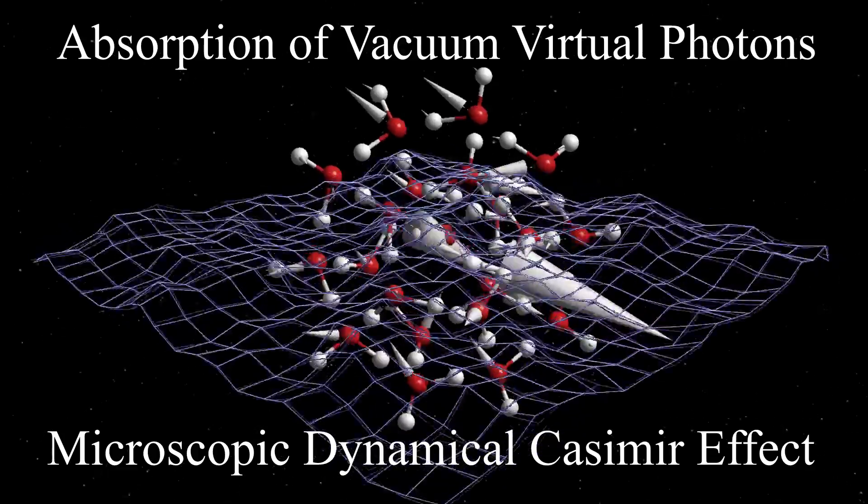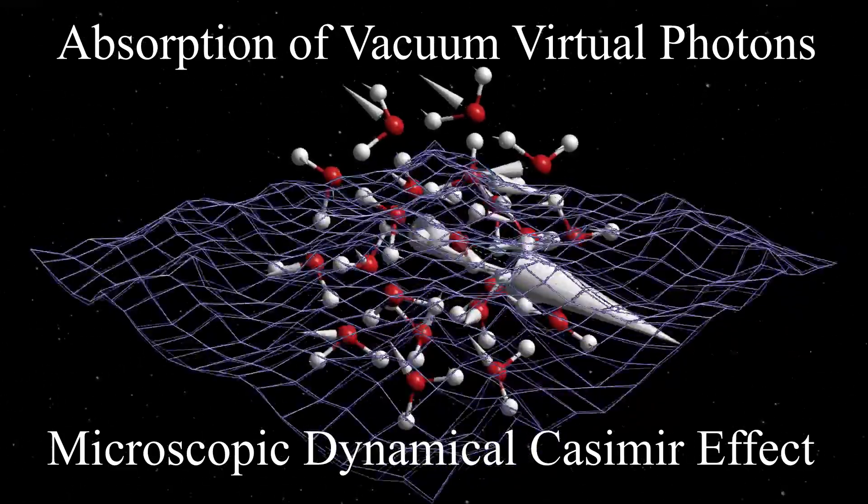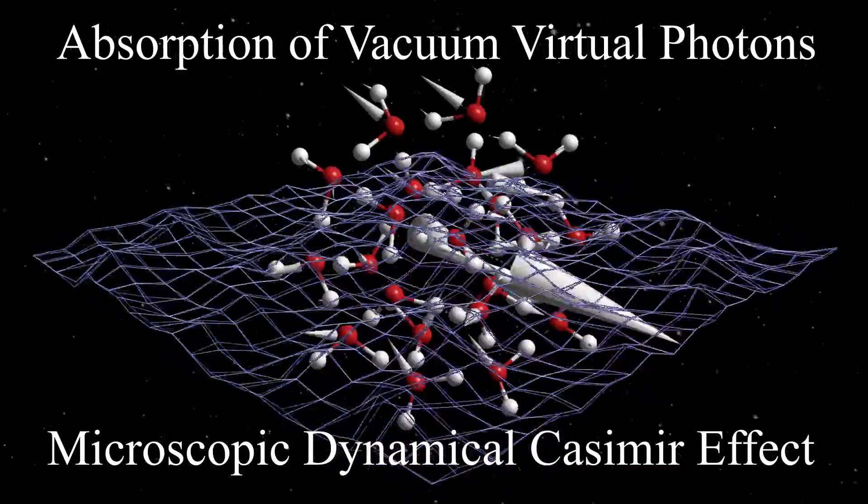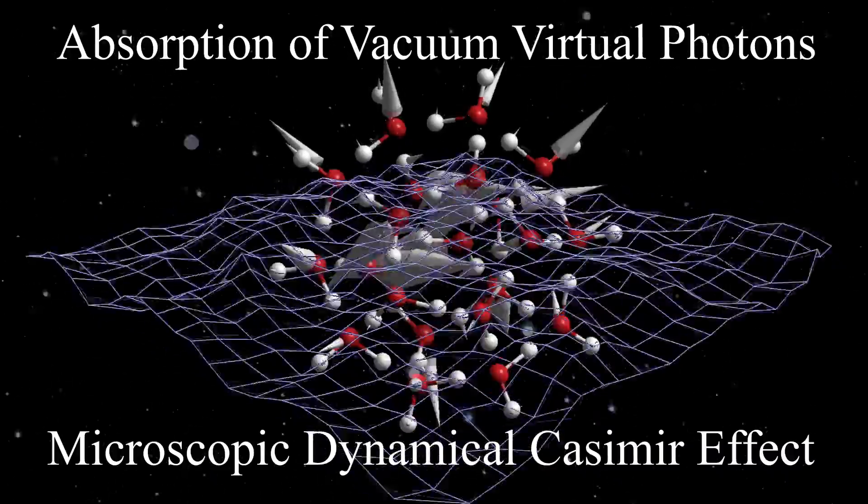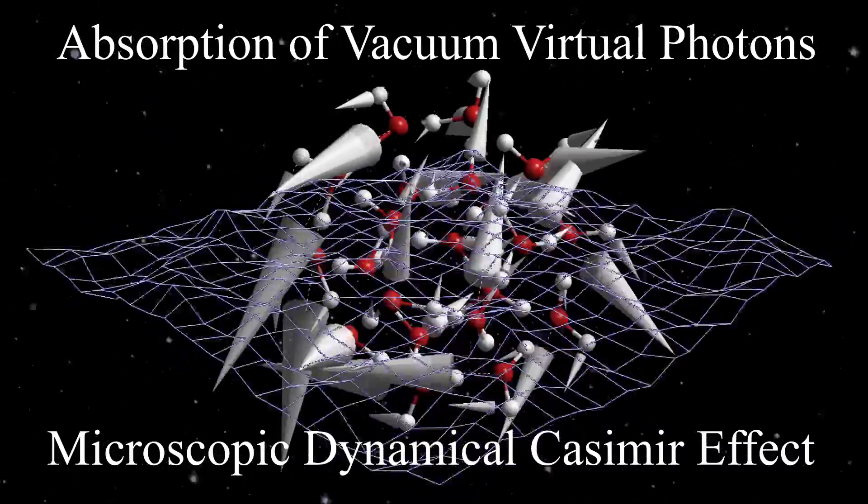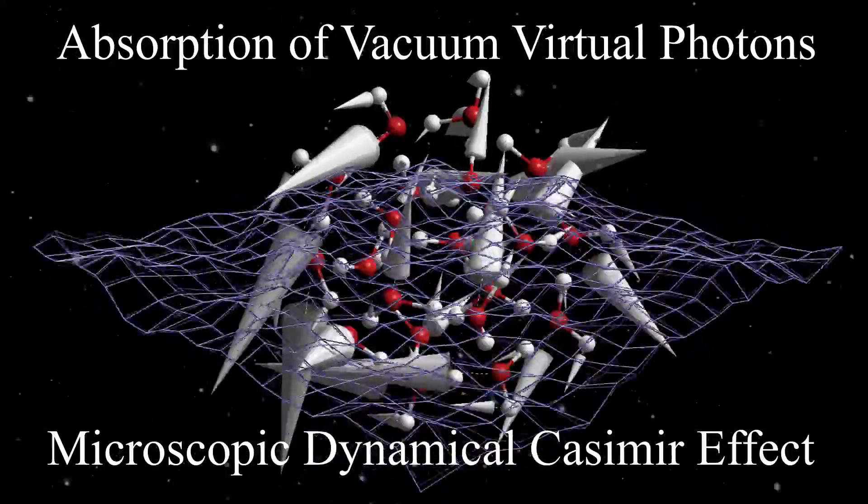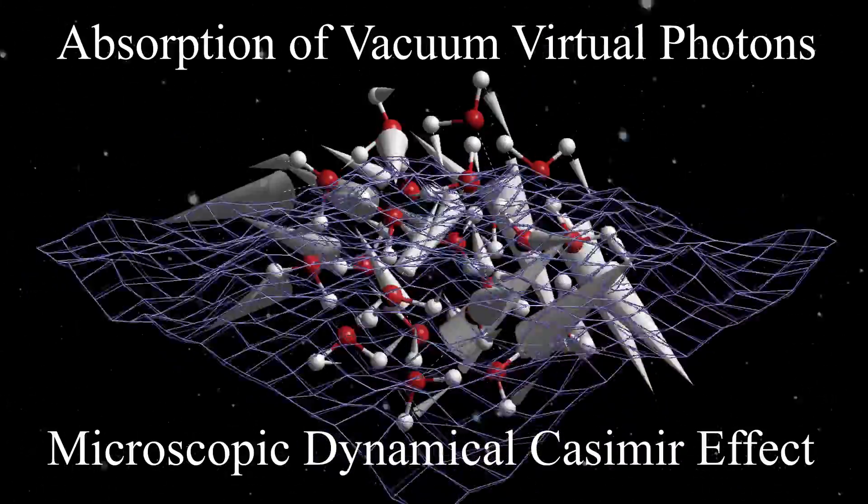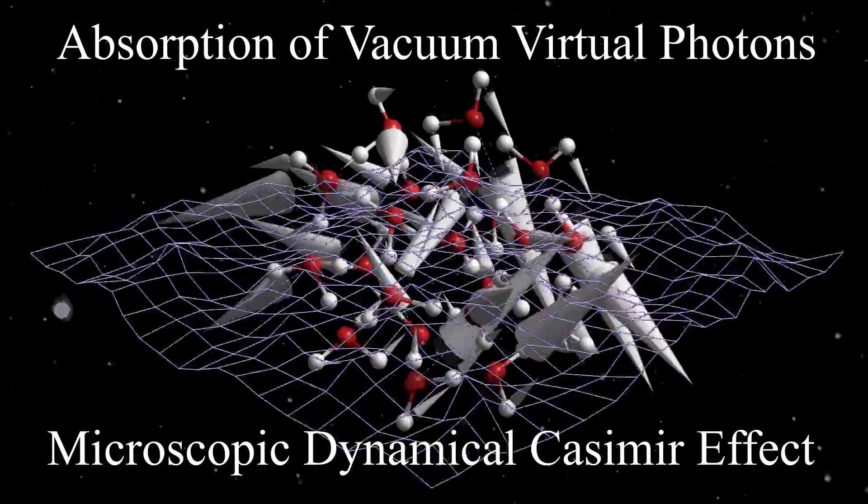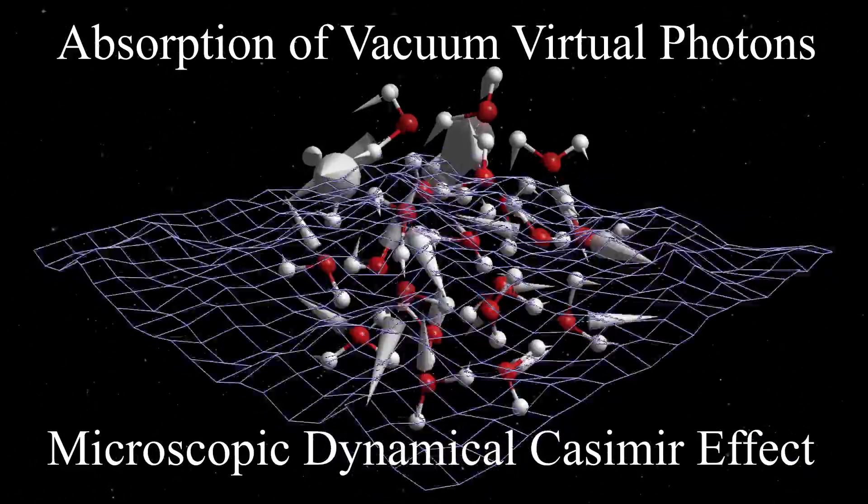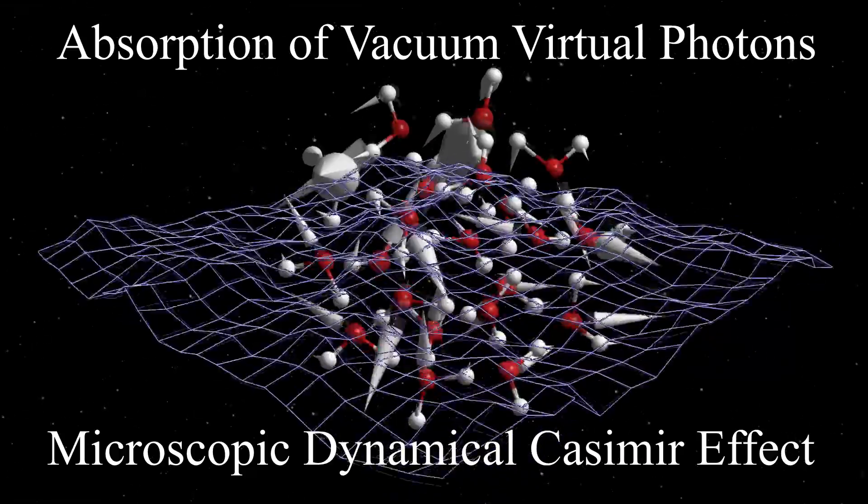To summarize visually, cosmic water nanoclusters can absorb vibrationally by the microscopic dynamical Casimir effect the unwanted high-frequency virtual photons of zero-point energy vacuum fluctuations. Only vacuum fluctuations below the water nanocluster cutoff vibrational frequency are gravitationally active.